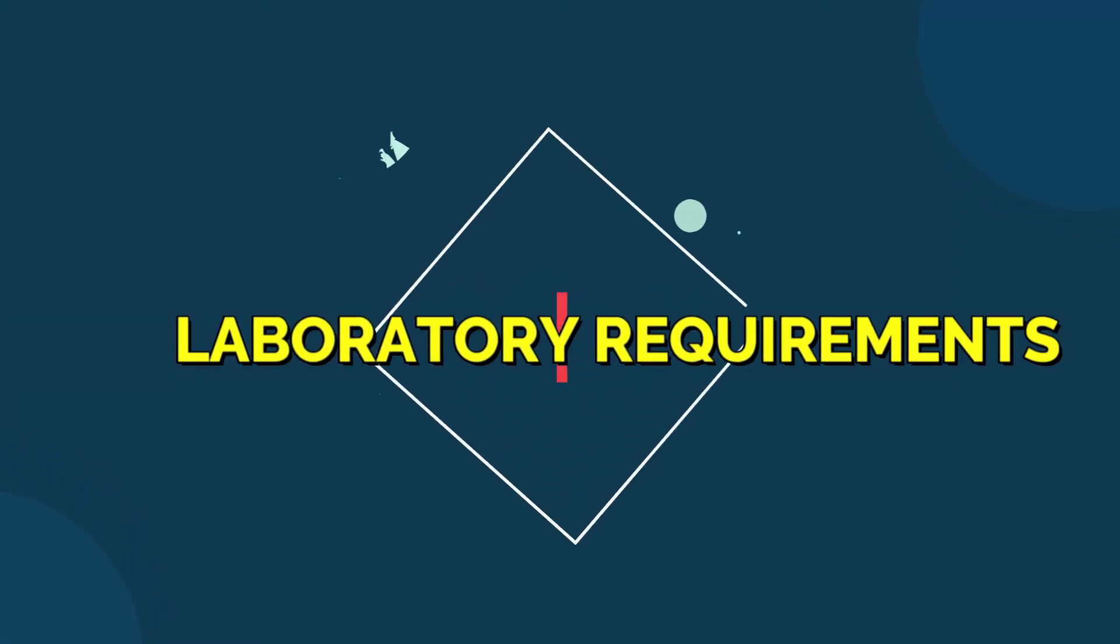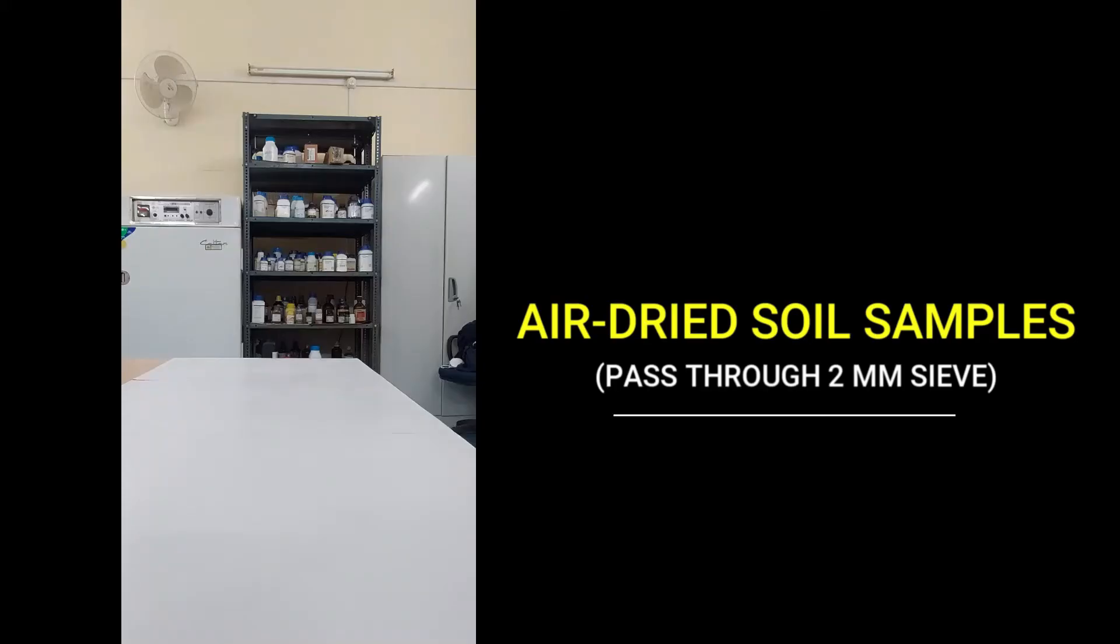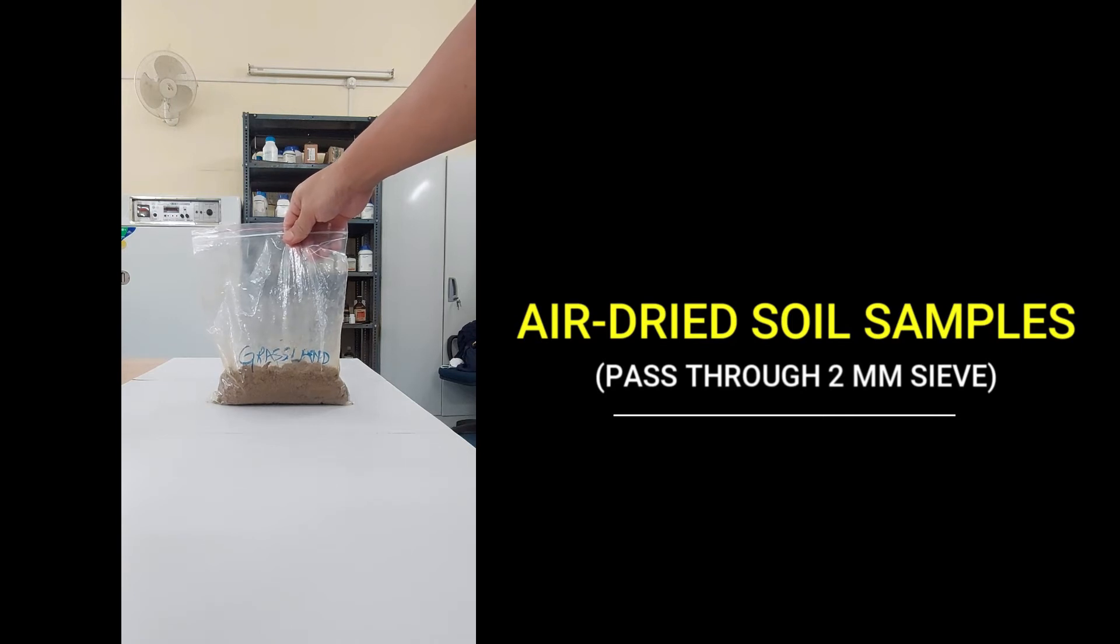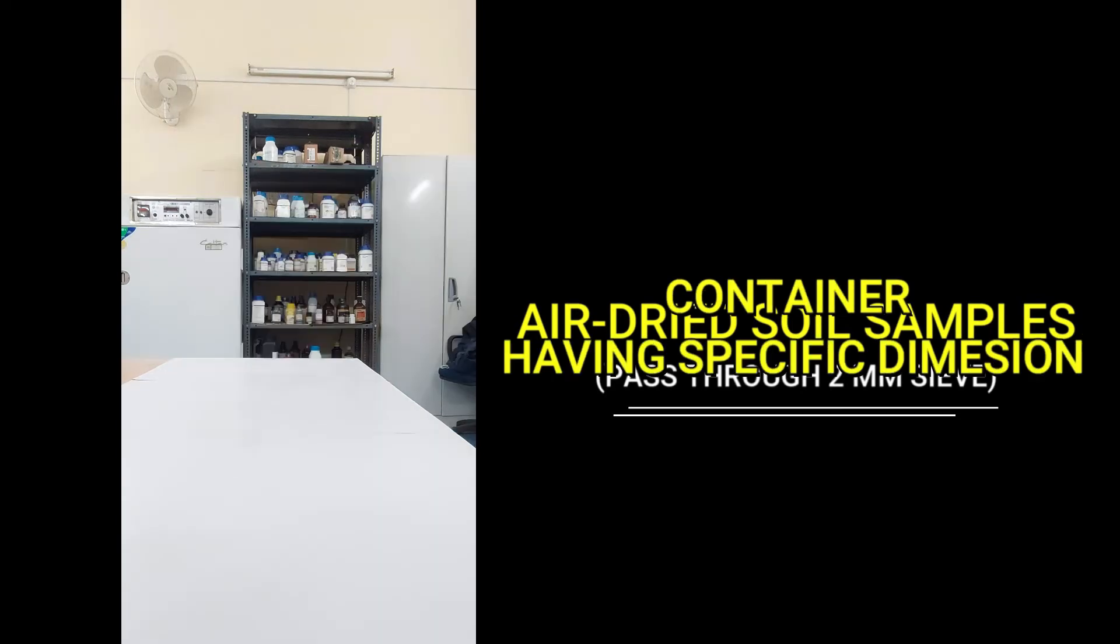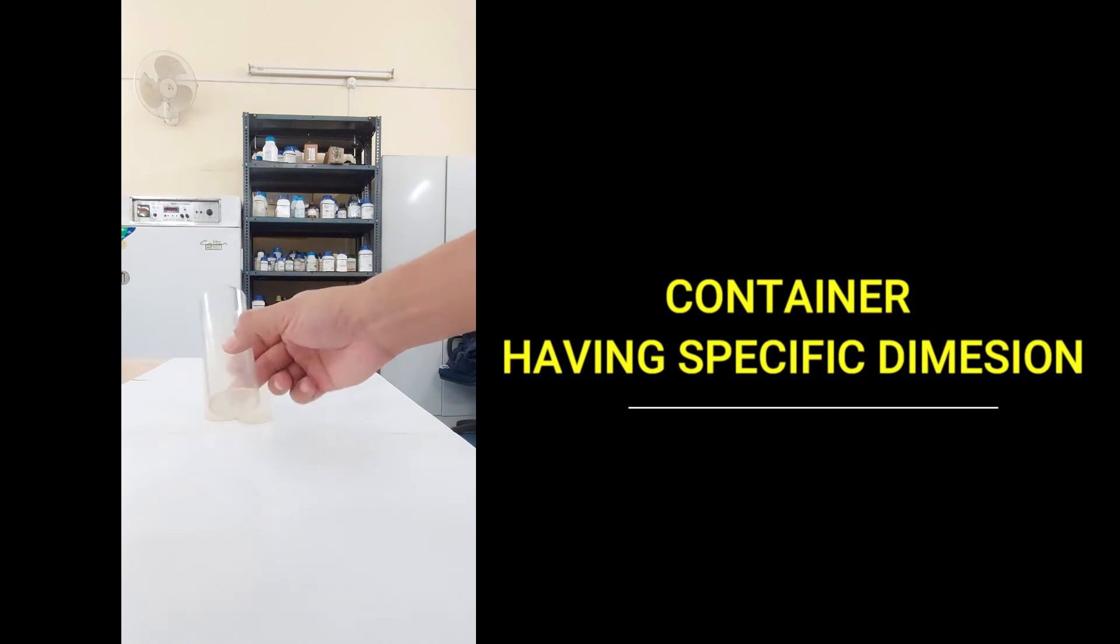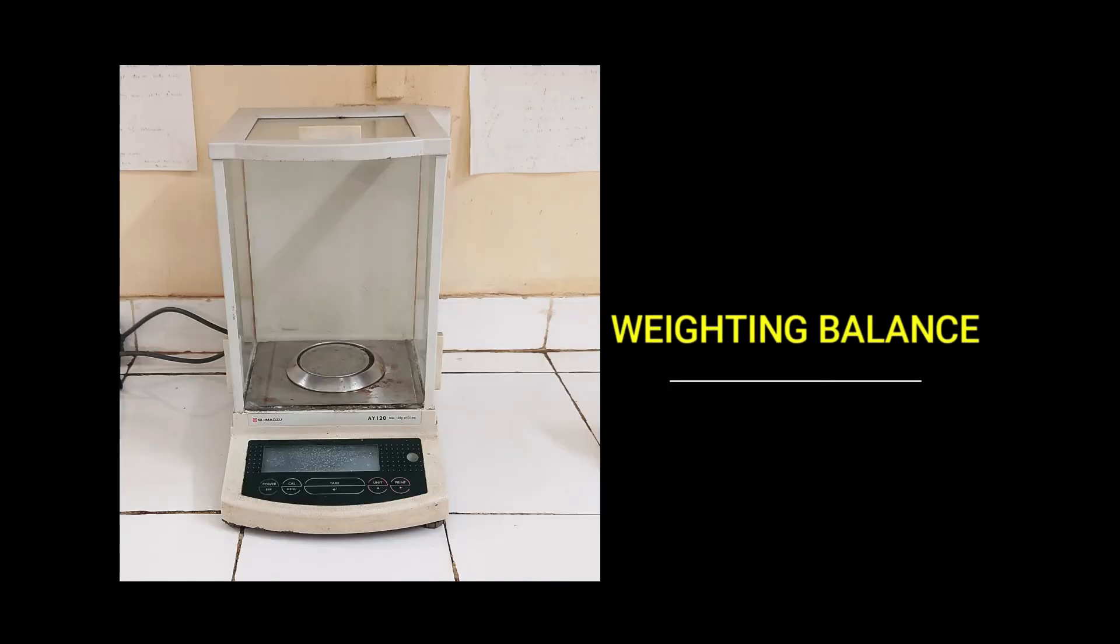Next, let's see the items required for conducting bulk density of soil sample. The items required are: first, you need an air-dried soil sample which has been passed through a 2mm sieve. You need a container—I'm using this type of vial with a definite dimension—a burette, and a weighing balance.